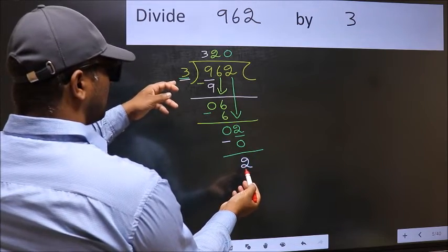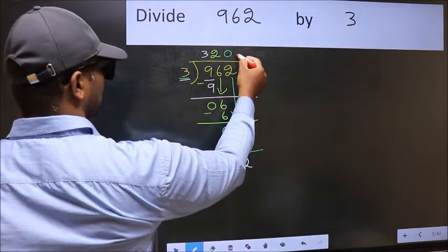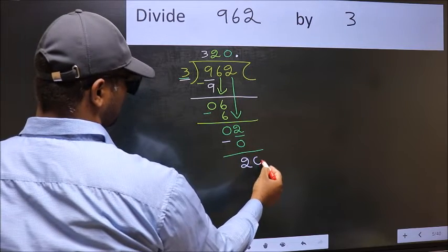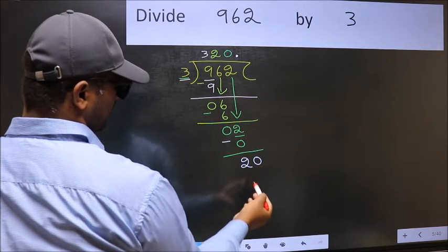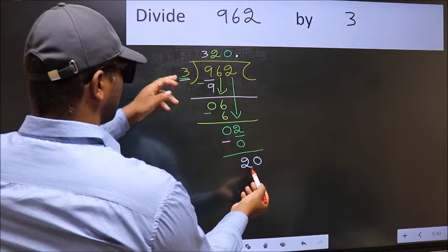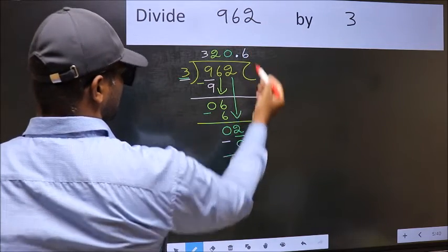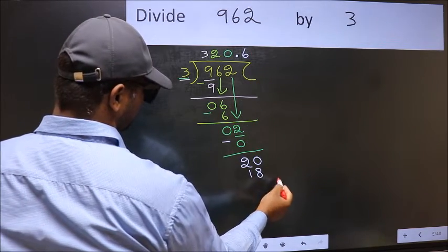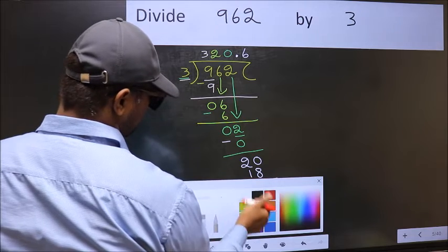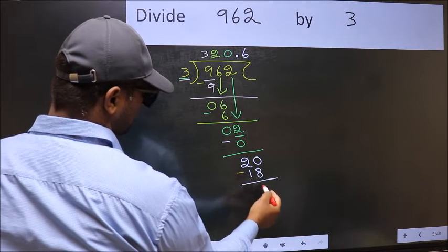So 20. A number close to 20 in 3 table is 3 times 6, 18. Now you should subtract 20 minus 18, 2. We got 2 again that means we get bar on this number. So this is our quotient.